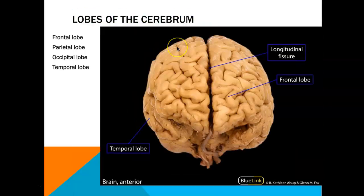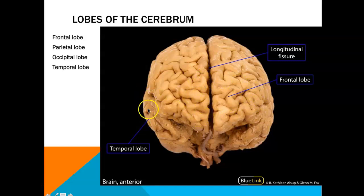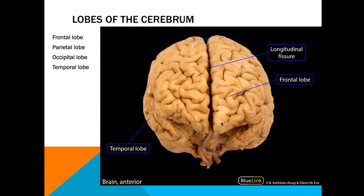This is another view of the brain — an anterior view — where we can see the frontal lobe and the temporal lobe laterally. Dividing the two cerebral hemispheres we have the longitudinal fissure pictured here, also called the mid-sagittal fissure.